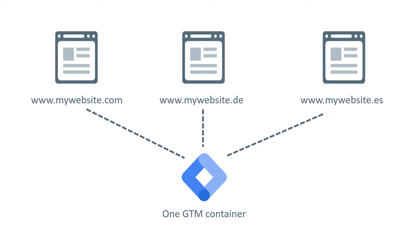That means if I want to fire a tag, I won't need to add more complex trigger conditions specifying which website to fire on and which to exclude. But you might be wondering: how should you configure Google Analytics in a single container, when you want to fire one Google Analytics 4 property for mywebsite.com, another for mywebsite.de, and another for the Spanish website?